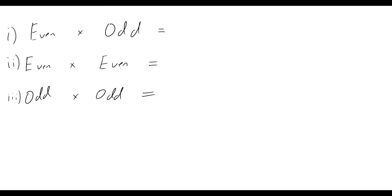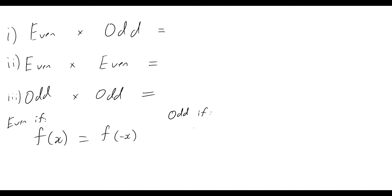The first thing we need to consider is: what exactly is an even and an odd function? If a function is even, it must satisfy the condition that f(x) is equal to f(-x). For a function to be odd, it must satisfy the condition that f(-x) is equal to negative f(x). So for an even function f(x) equals f(-x), and for an odd function f(-x) equals negative f(x).